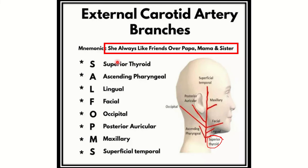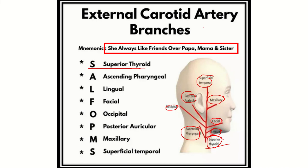The mnemonic is 'She always likes friends over papa, mama and sister.' So here we have superior thyroid first, then ascending pharyngeal, lingual, facial, occipital, posterior auricular, and the two terminal branches — maxillary and superficial temporal. These are the eight branches of the external carotid artery, and the first branch is the superior thyroid artery.